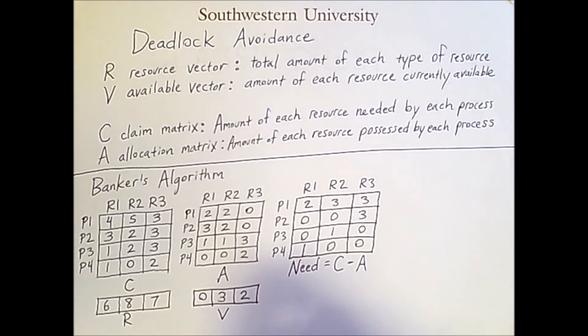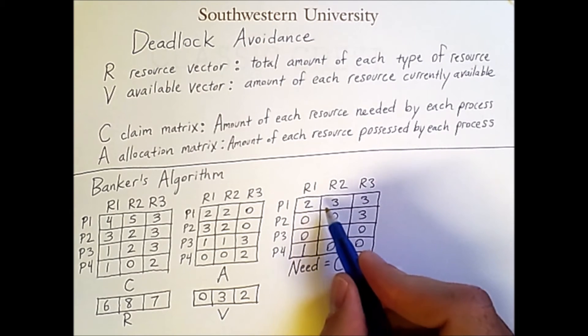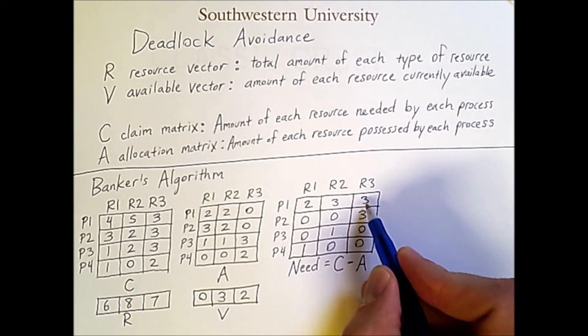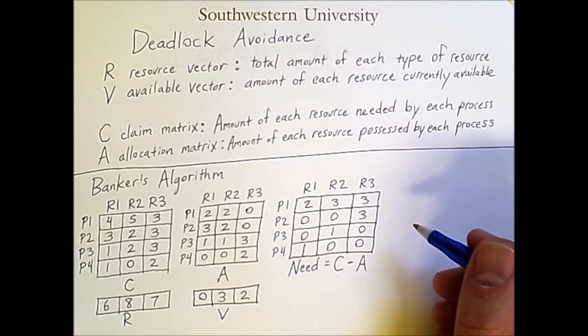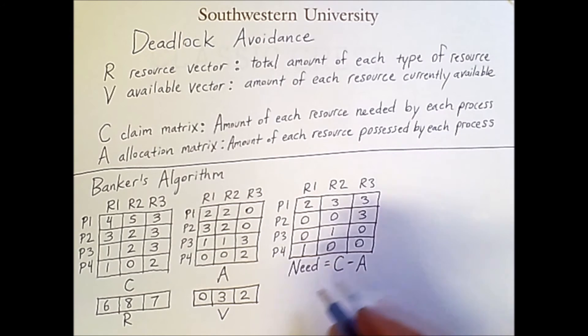we can determine whether it's possible to execute a process and avoid deadlock by comparing the rows in the need matrix to the available vector. Specifically, if the amount of each resource type that is needed for a given process is less than or equal to the corresponding available values of each resource, then that particular resource can be safely run to completion.